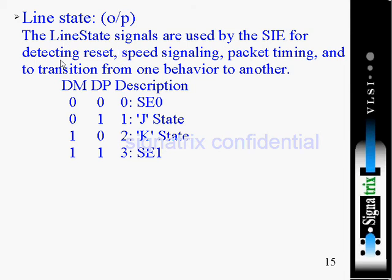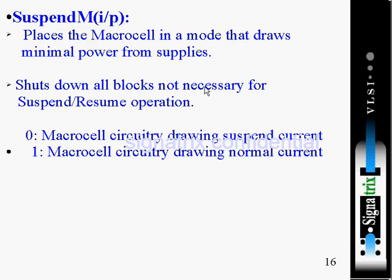Line state is an output signal that goes to your serial interface engine. Based on that signal, the engine will detect reset, speed signaling, packet timing, and transitions from one behavior to another.